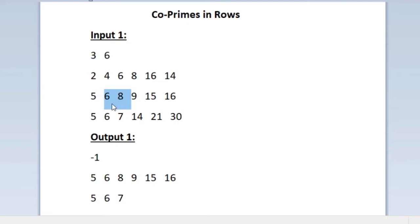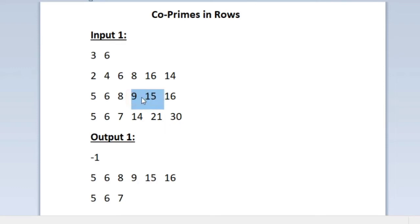Checking 6 and 8: both can be divided by 2, so their HCF is not 1 — not co-prime. Moving on to 8 and 9: these can only be commonly divided by 1, so their HCF equals 1. Therefore 8 and 9 are co-prime, and we print both. The next pair is 9 and 15: since 3 divides both, they are not co-prime.